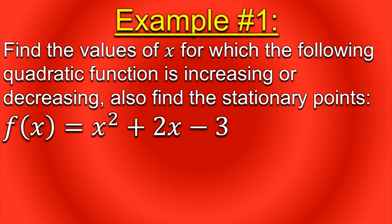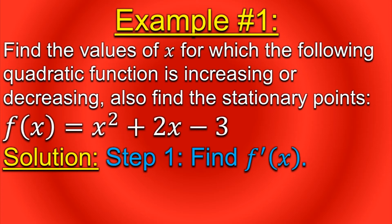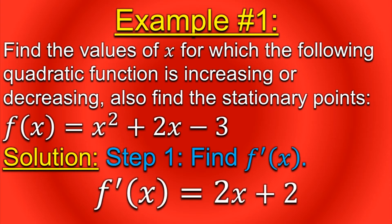Moving on to the first example, in which we have to find the values of x for which the following quadratic function is increasing or decreasing. We also need to find the stationary points of this function. A quadratic function is a function whose greatest power is equal to 2. Moving on to the solution — first of all, find the derivative of the function.